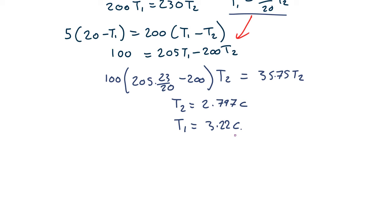Plugging these values back into the equations, we find the total heat flow due to convection and conduction is about 84 watts. So in total we're losing about 100 watts through radiation and about 84 watts due to conduction and convection — meaning making the glass thicker won't do much good if radiation still dominates. All up, about 200 watts leaking through one square meter, which is quite a lot. This is why single glazed windows without curtains are not a very good idea.